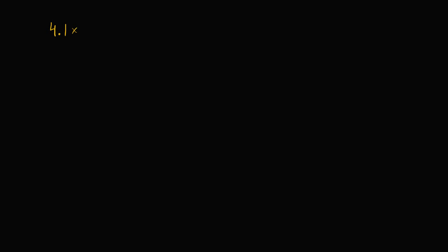Let's work through this again. We have 4.1 times 10 to the negative 2 power, and we want to subtract 2.6 times 10 to the negative 3 power. The strategy is to convert one of these numbers so it's multiplied by the same power of 10 as the other. Can we express 4.1 times 10 to the negative 2 as something times 10 to the negative 3?